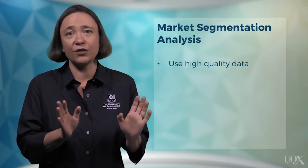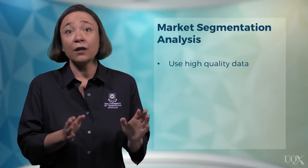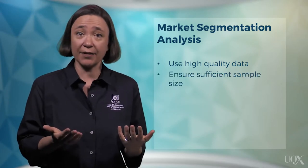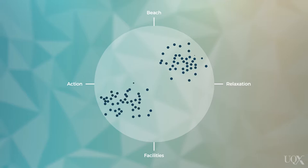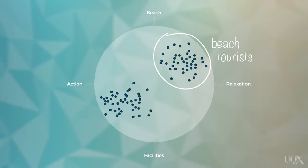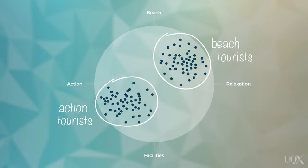Bad data never leads to good segments. You need to have sufficient sample size. Look at this chart — each dot is one tourist. How many segments are there? Hard to tell, right? What about now? The answer is that there are two segments: the beach tourists craving relaxation and the action tourists enjoying man-made attractions. We needed more data in our two-dimensional space to see this, and so does the algorithm that computes a segmentation solution.